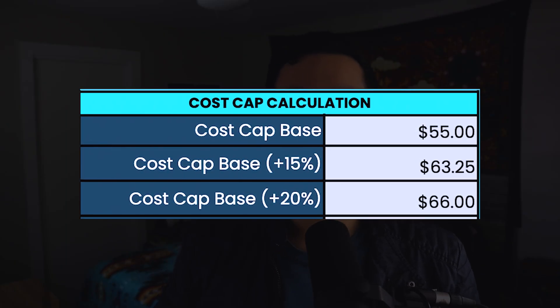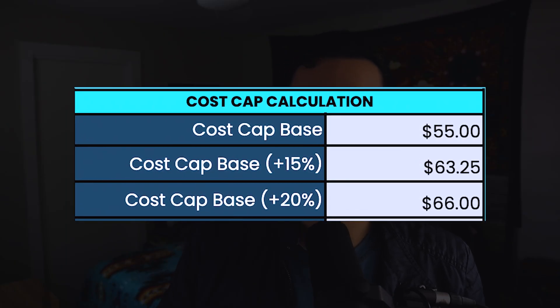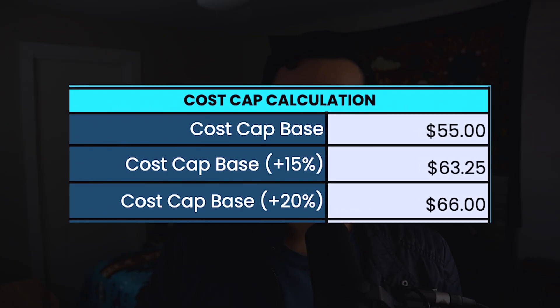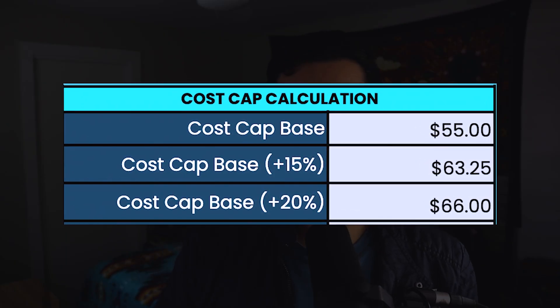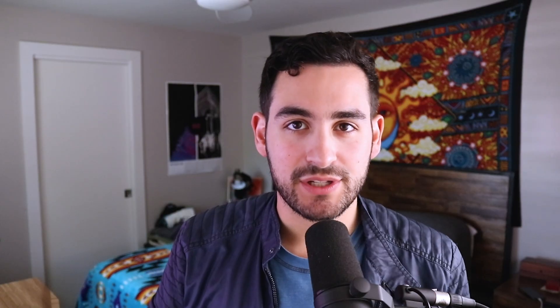For setting your CPA target on a cost cap campaign, we recommend slightly inflating your target to start — about 15 to 20% above your desired CPA target. For example, if your target CPA is $55, you'd want to start with it around $66, which is 20% above your desired target.